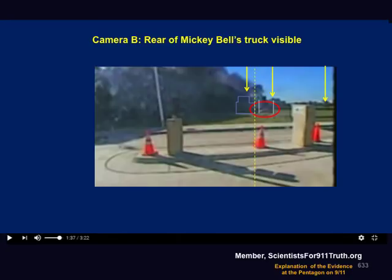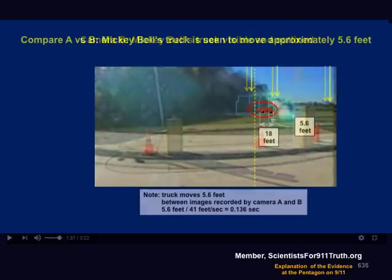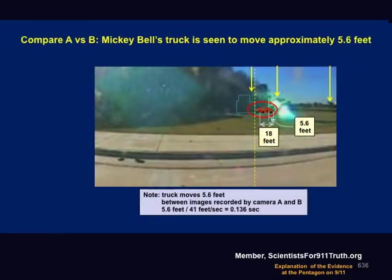Here is the first frame of camera B that shows the truck, with the wheels and body marked. Note that the images of the truck as seen in camera A and camera B are out of register by about 5.6 feet. If the offset is 5.6 feet and the truck is moving 41 feet per second, the offset between the two cameras is 0.136 seconds, which works out to be 4/30ths of a second. This is consistent with the measurements we did earlier, but it is independent of assumptions about the speed of the plane — an independent confirmation of the offset between the two camera recording times, and therefore an independent confirmation of the speed of the plane.